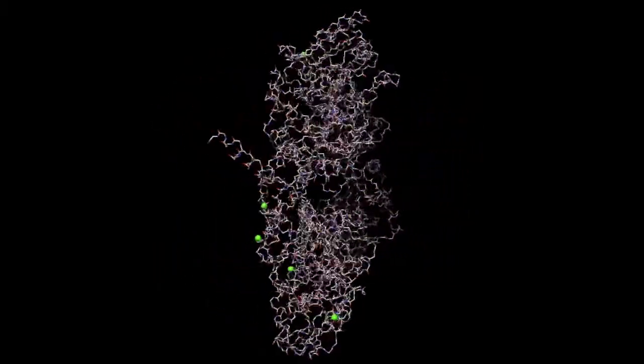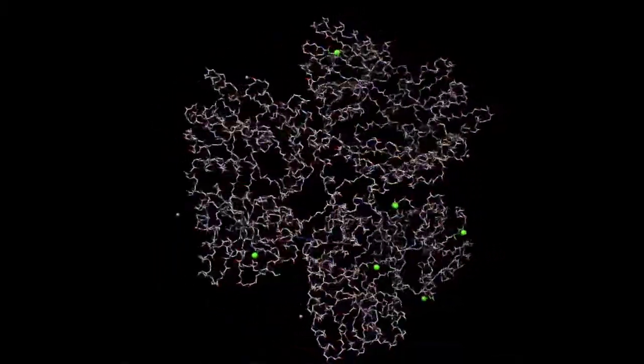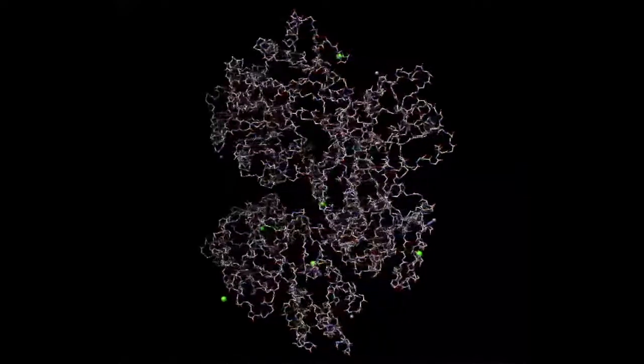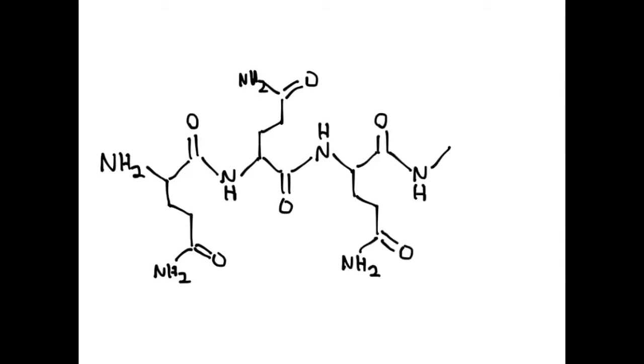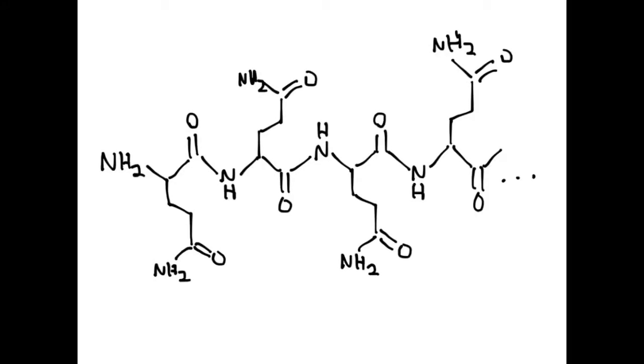Huntington has a mass of 347 kilodaltons and is composed of 3,144 amino acids. On the N-terminus end, a normal Huntington protein has a repeating region of 11 to 34 glutamine residues. In Huntington's disease, Huntington has over 35 glutamine residues on this N-terminus end.